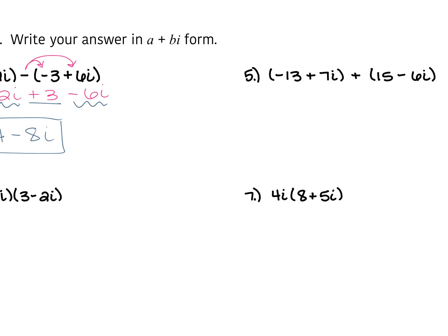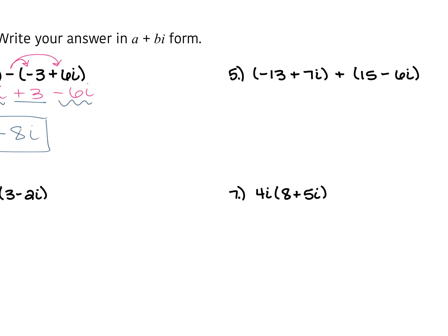For number 5, we have negative 13 plus 7i plus 15 minus 6i. This one has addition between the two parentheses, so we're just going to get rid of those parentheses and combine like terms. We have negative 13 and 15 — 15 minus 13 gives us 2. Then 7i minus 6i is just positive i. So that's 2 plus i.